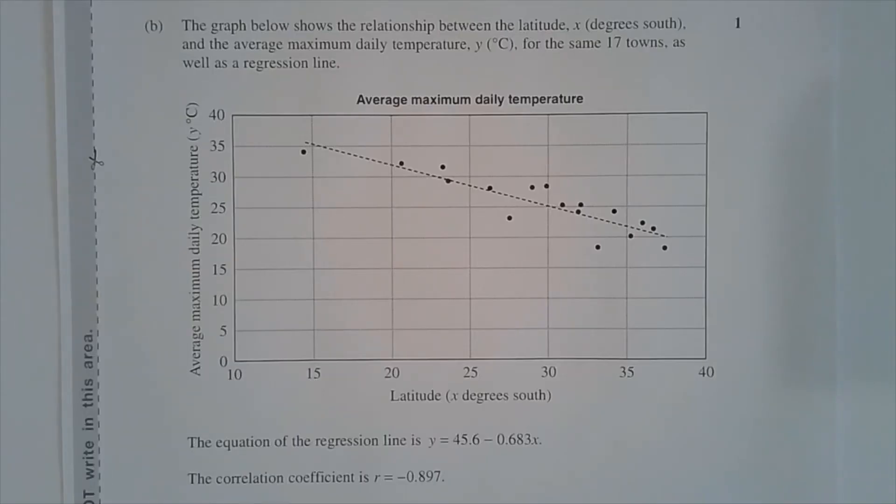Part b. The graph below shows the relationship between the latitude, x degrees south, and the average maximum daily temperature, y degrees Celsius, for the same 17 towns, as well as a regression line.